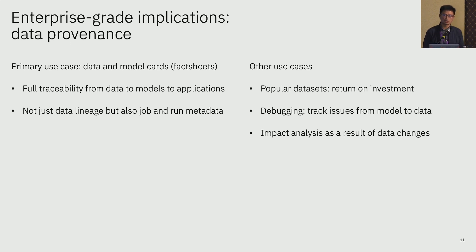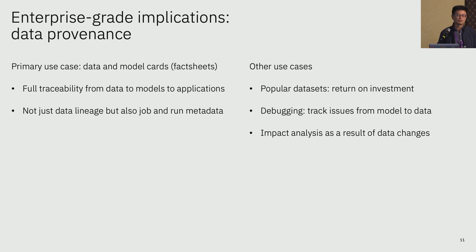It's important to disclose all the lineage, because any of the preprocessing jobs, if they have code changes that we don't know about, will produce discrepancies in the results. There are other use cases too — you could identify popular datasets or even document-level popularity and have return-on-investment discussions. You can also do debugging: if you find issues downstream with the model output, you want to be able to pinpoint upstream to the tokens and also to the raw data. And then there's impact analysis — say we procure a dataset from a proprietary source and that license has expired and we need to pull it out; what's the impact on downstream models and applications? That becomes an interesting exercise as well.